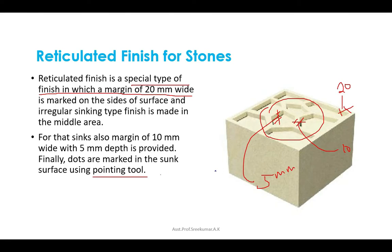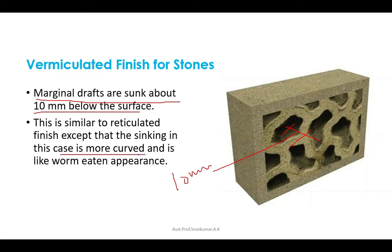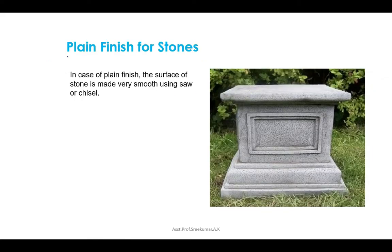The vermiculated finish is similar to reticulated finish, except that the marginal drafts are sunk about 10 millimeter below the surface, and the sinking is more curved with a worm-eaten appearance. In the plain finish, the surface of stone is made very smooth using a saw or chisel.